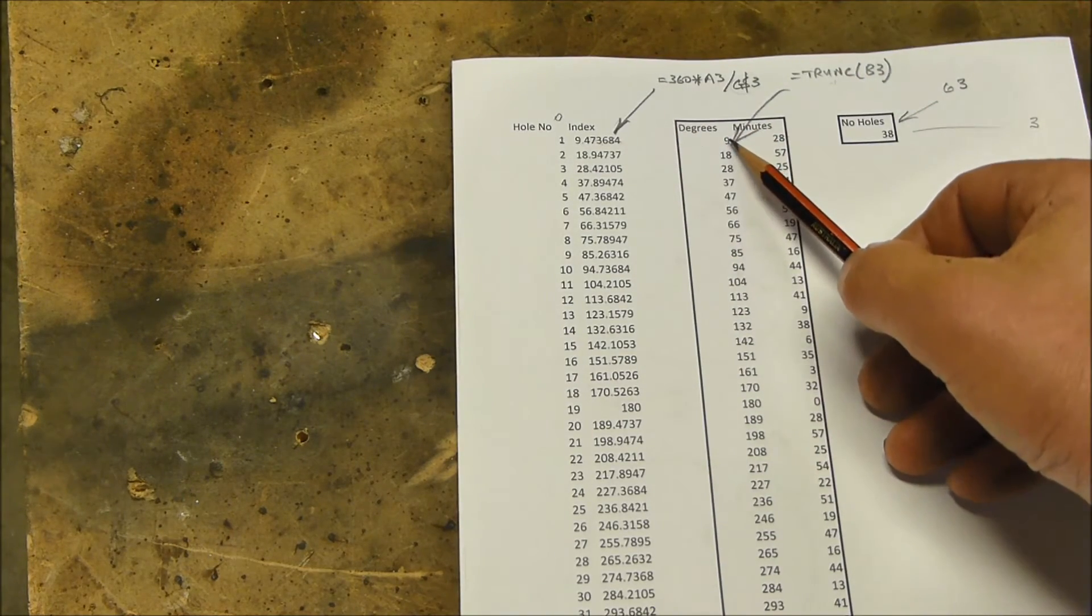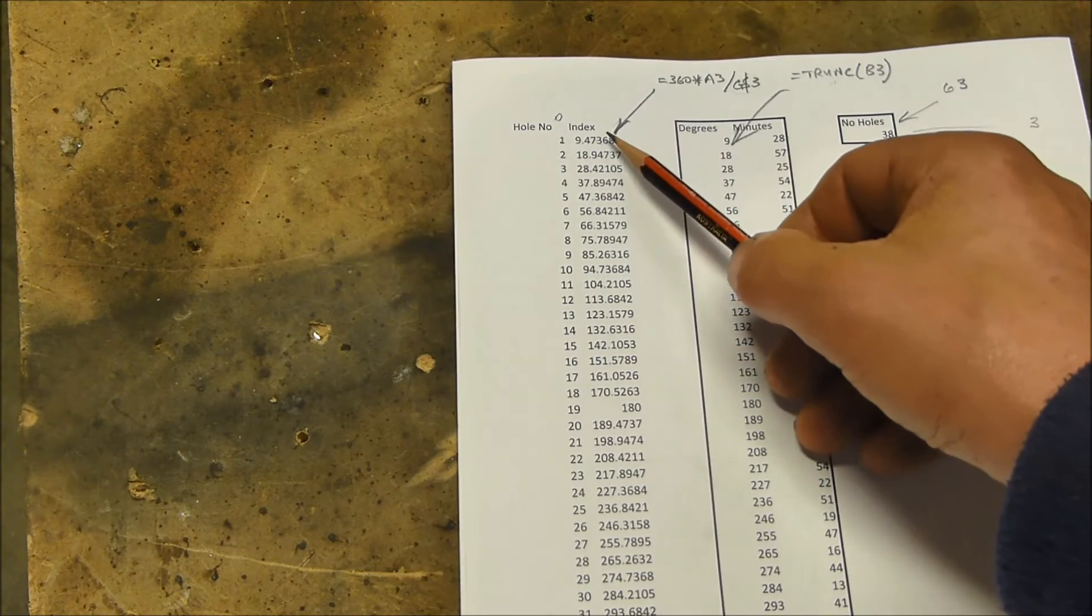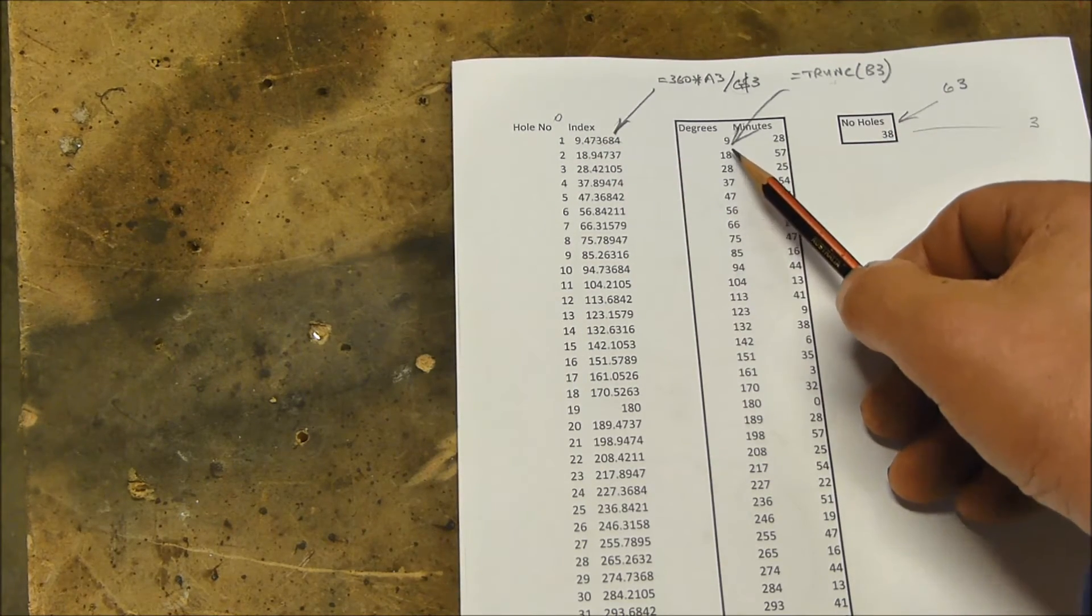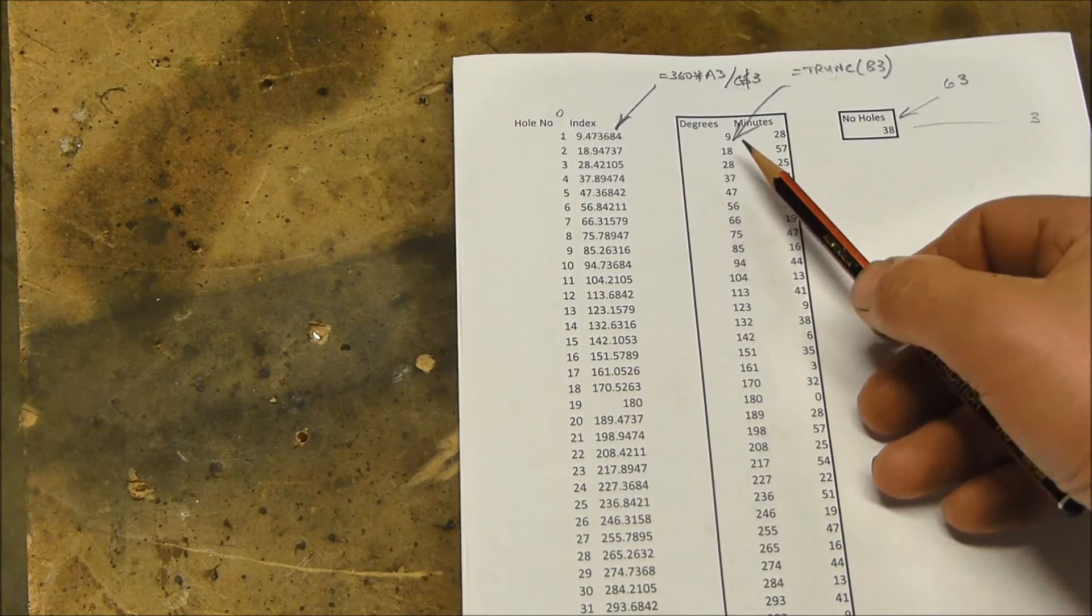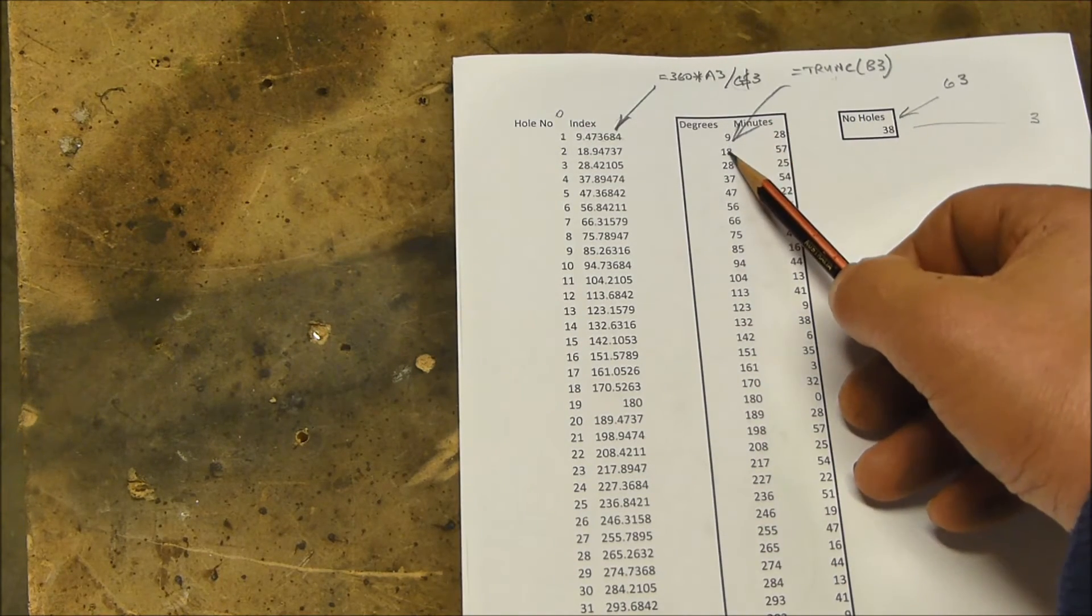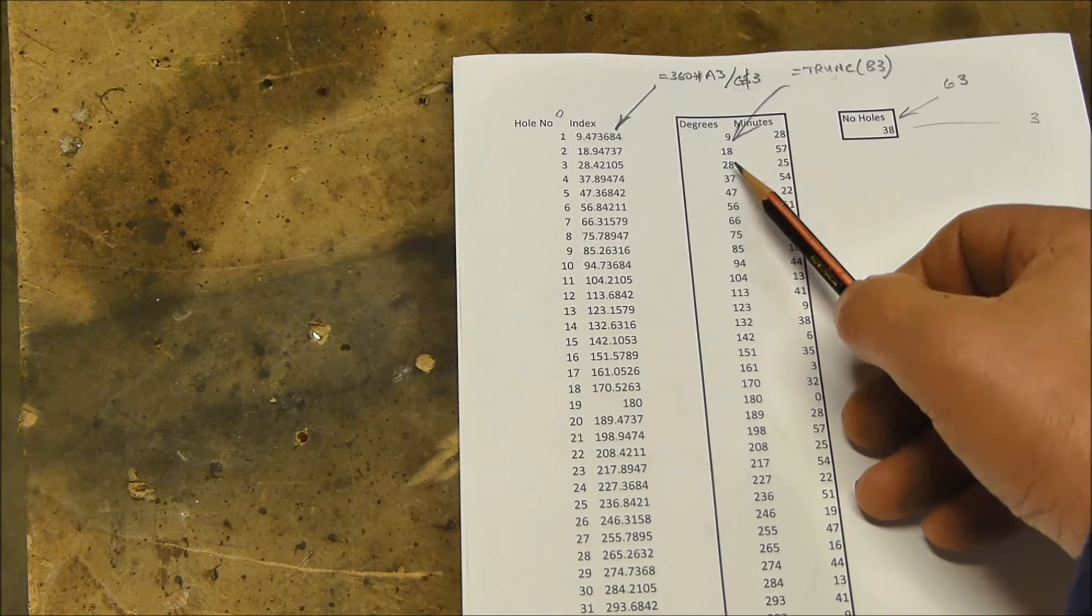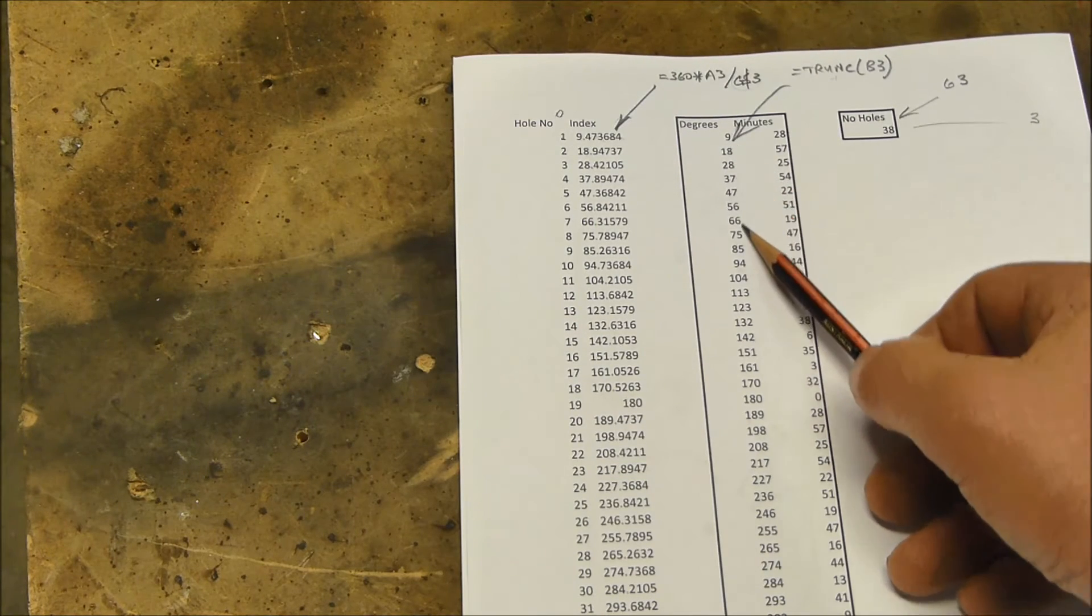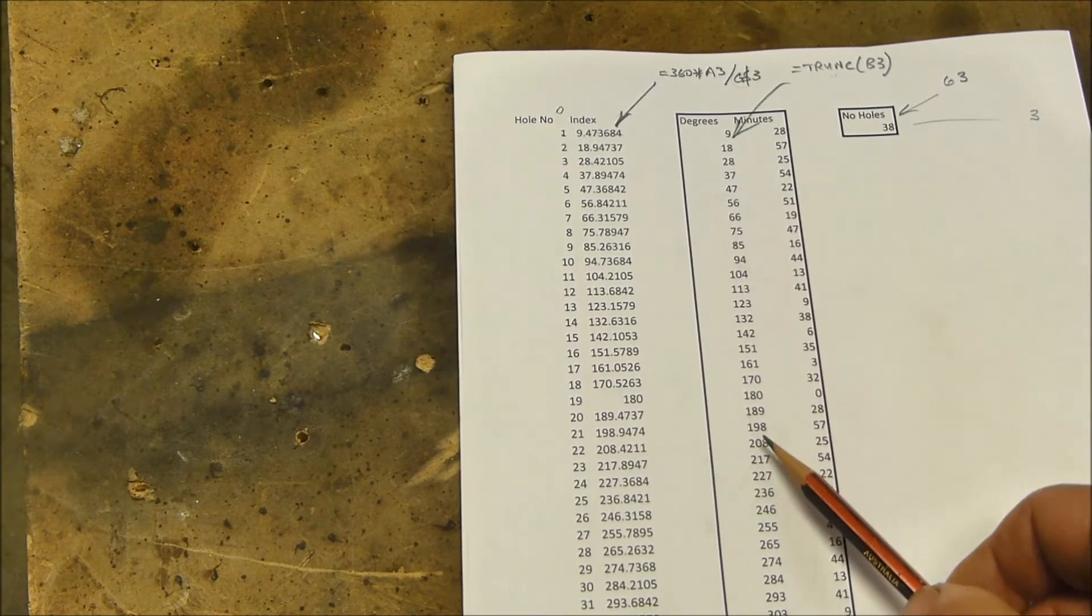or give us the number in front of the decimal point. So the formula in here is truncate B3, truncate 9.47 to get 9, and then if we copy that formula into the rest of these, Excel is clever enough to say this one must be B4, truncate B5, truncate B6, truncate B7, etc. So that gives us the whole, the number of degrees.